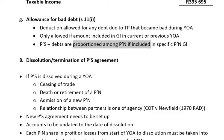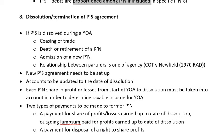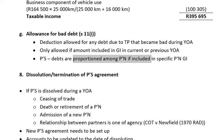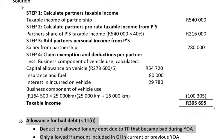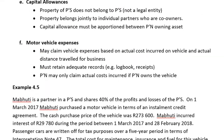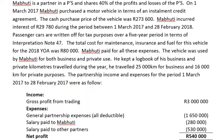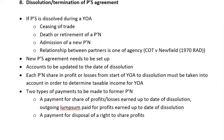These are all your deductions which you may find in a partnership. The most important ones are contributions made to any provident, pension, or retirement annuity; contributions made to a medical aid scheme; bad debts; allowance for bad debts; and any annuities or capital allowances. You need to go through all of them and understand all of them.